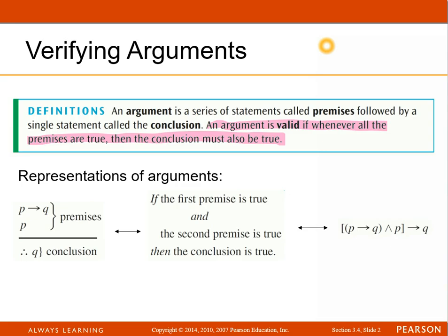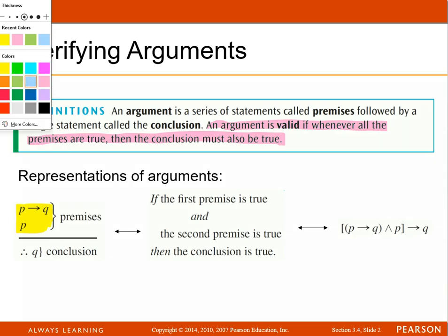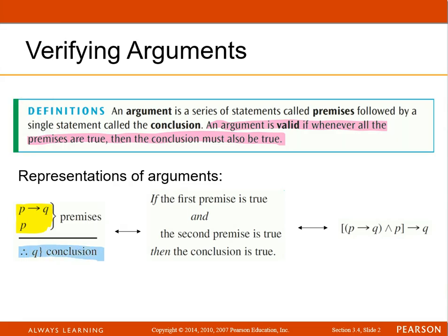The way it's going to be presented to you is they're going to give you a series of premises, and they'll be piled on top of each other, and then it'll be followed by a conclusion. And they use the three little dot thing there to mean, therefore.